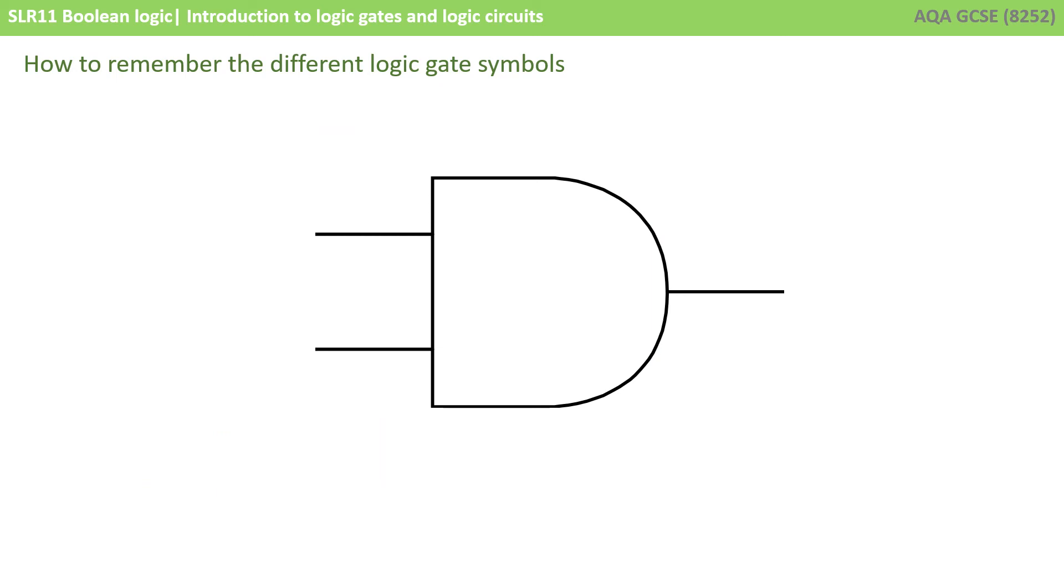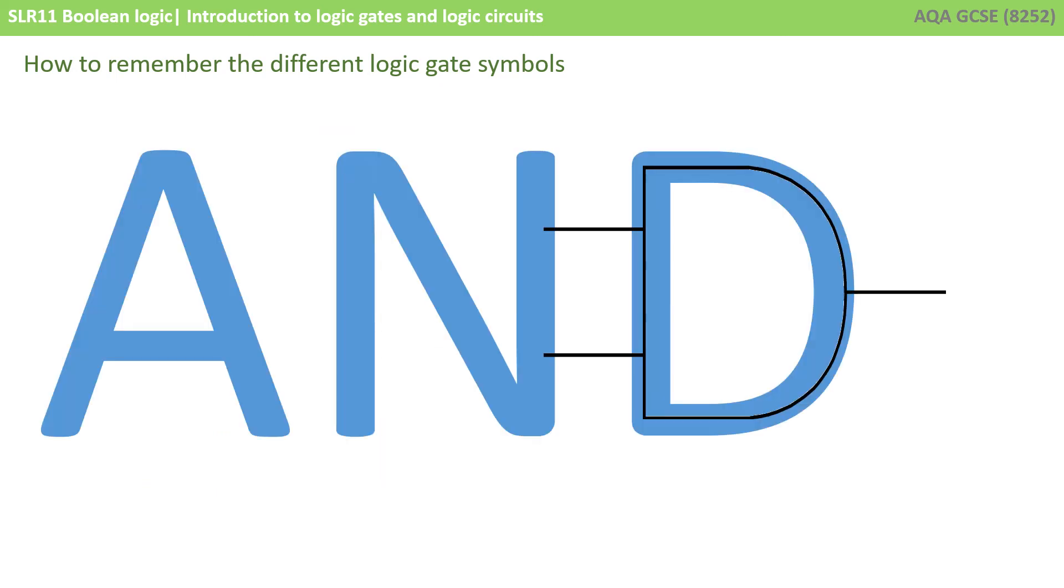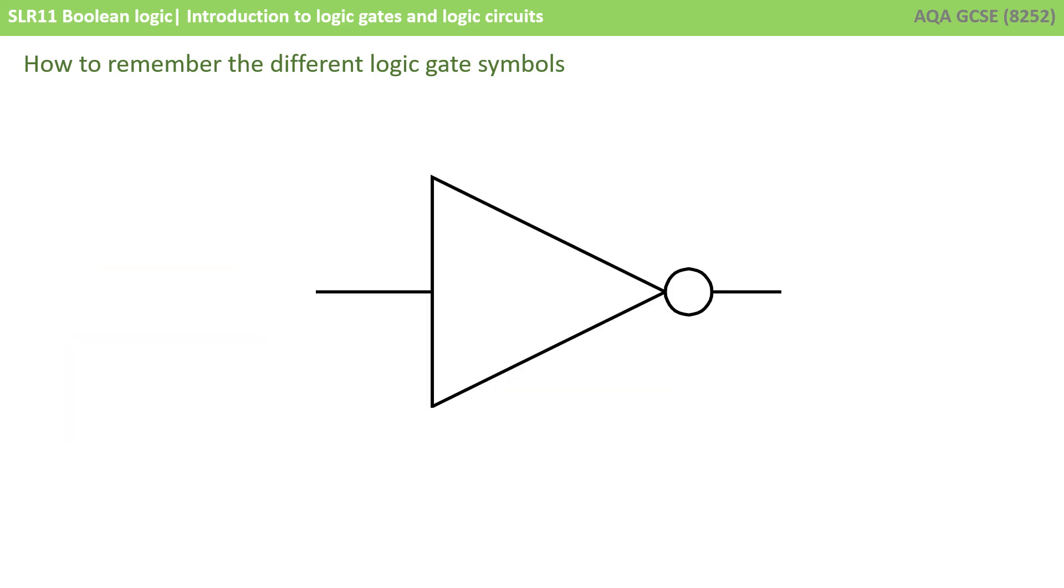This one is an AND gate, and you can think of it as being the letter D, of the word AND, a capital letter D. And finally, this one is a NOT gate, and you can think of the start of that gate as being the letter T. It's the only gate that could possibly be the letter T, because the other two take two inputs.